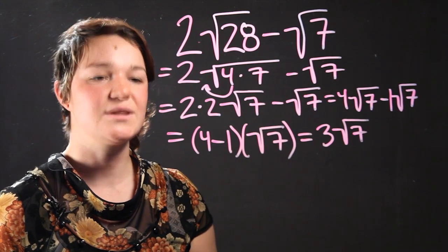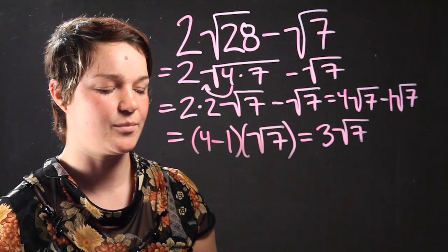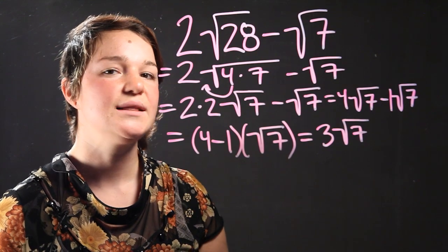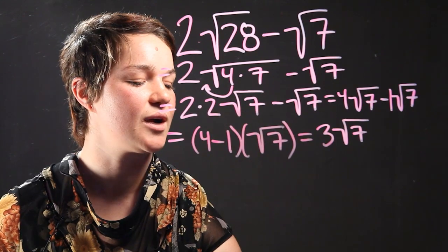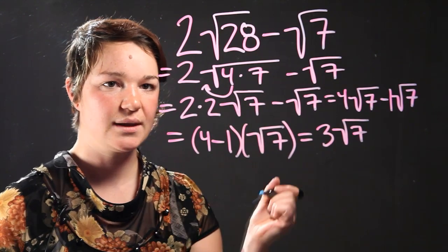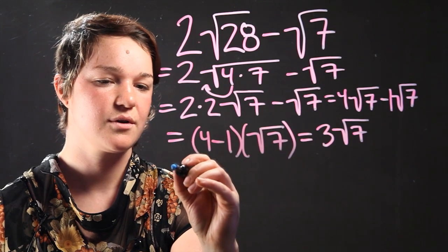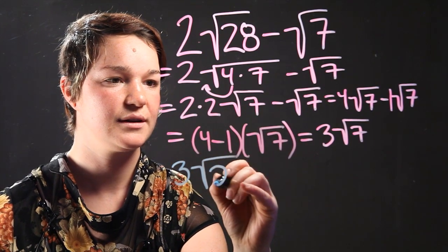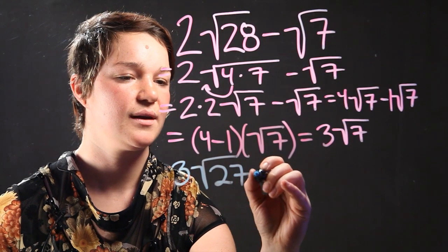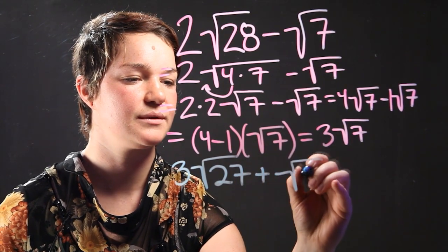Okay, so that's one example of how to subtract numbers with different radicals. Let's do another number where we add them. Let's do 3 square root of 27 plus square root of 3.